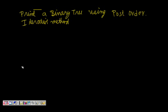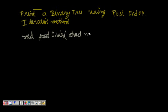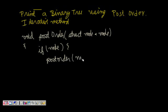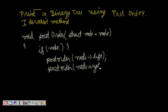Let us first try to find out what is the simple recursive method. We write: void postOrder(struct node* node). We pass the root pointer to this function, and then if node is not null, we do postOrder(node->left), then postOrder(node->right), and finally we print the node data. This is the basic post-order traversal of a binary tree.